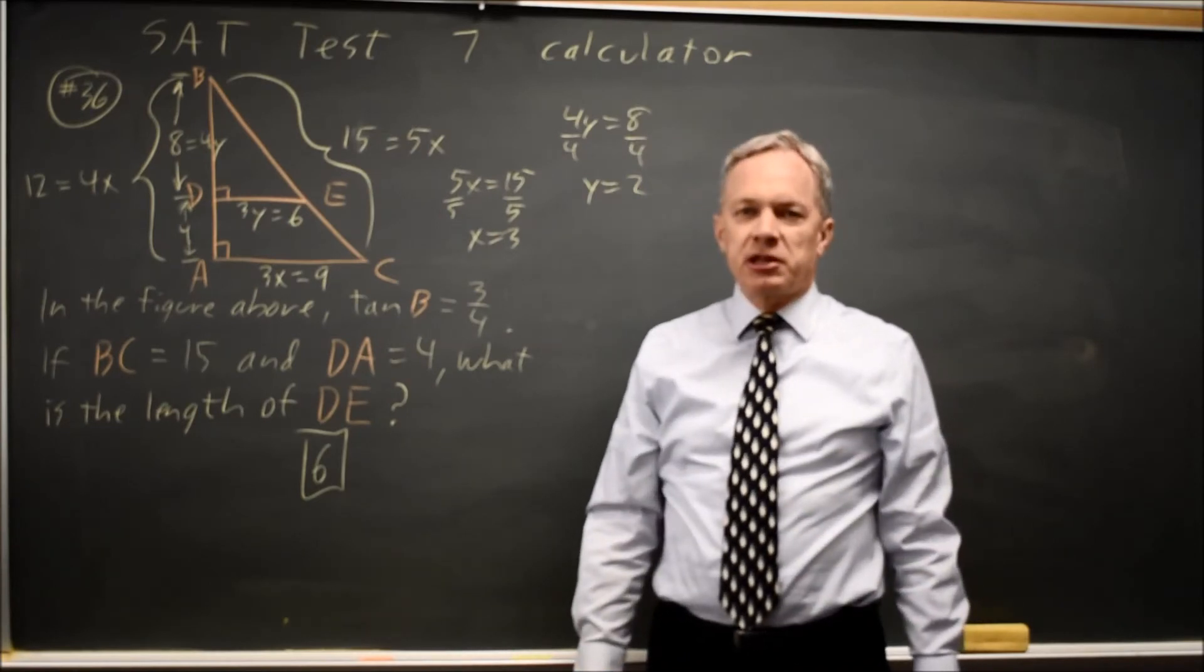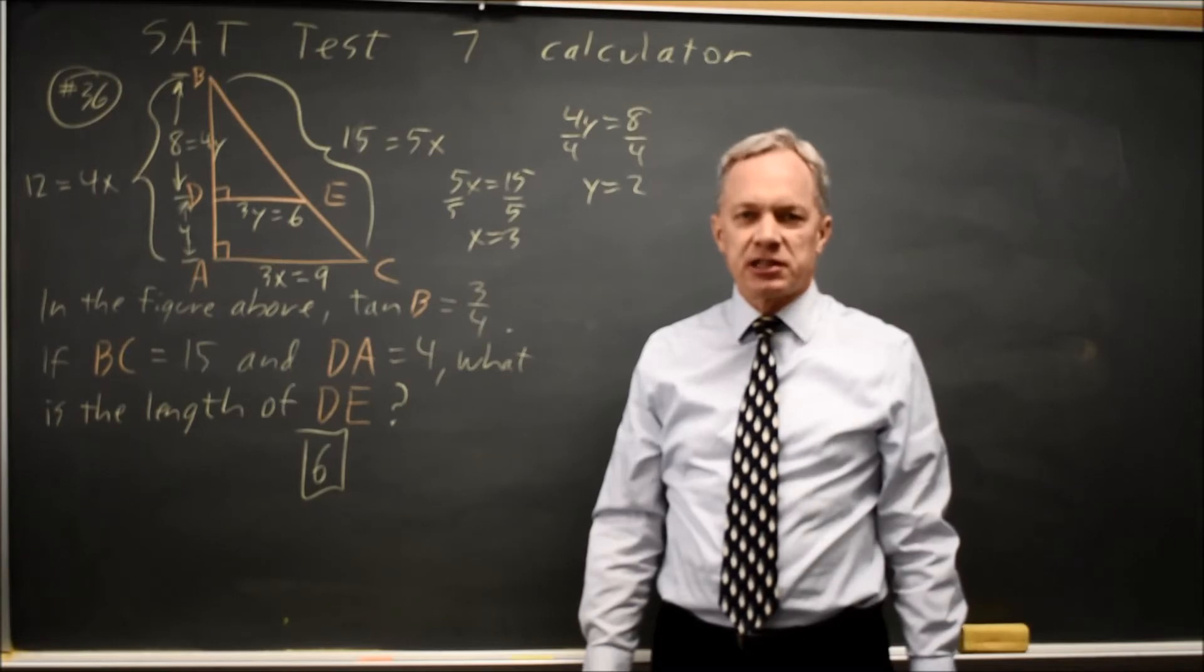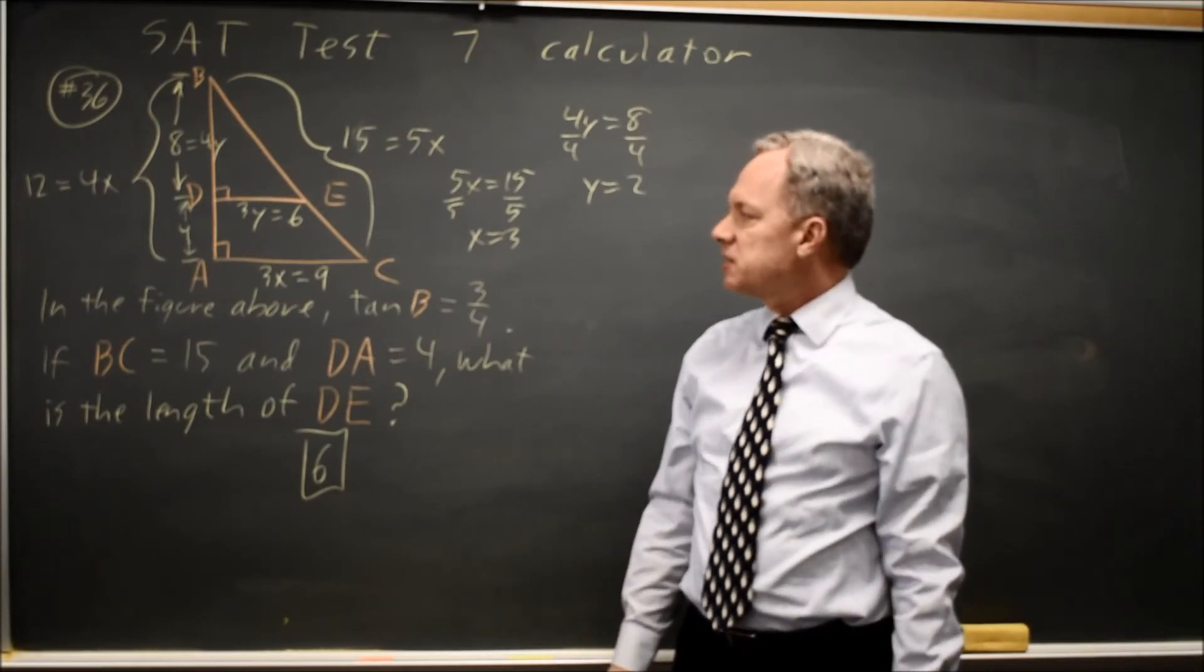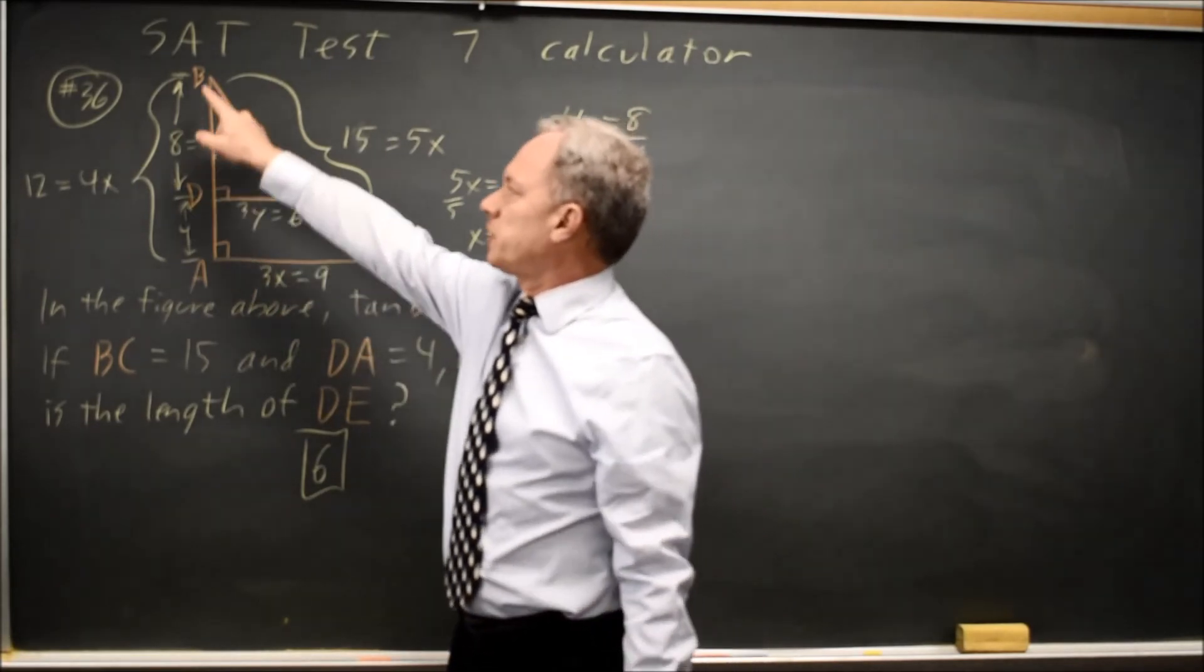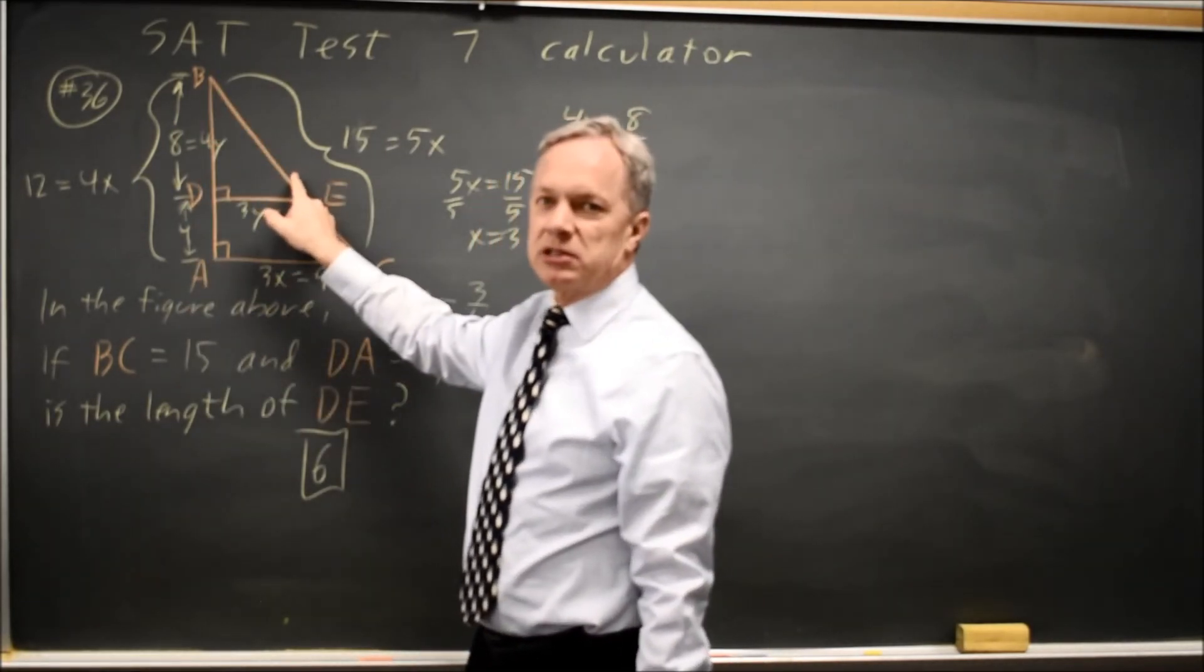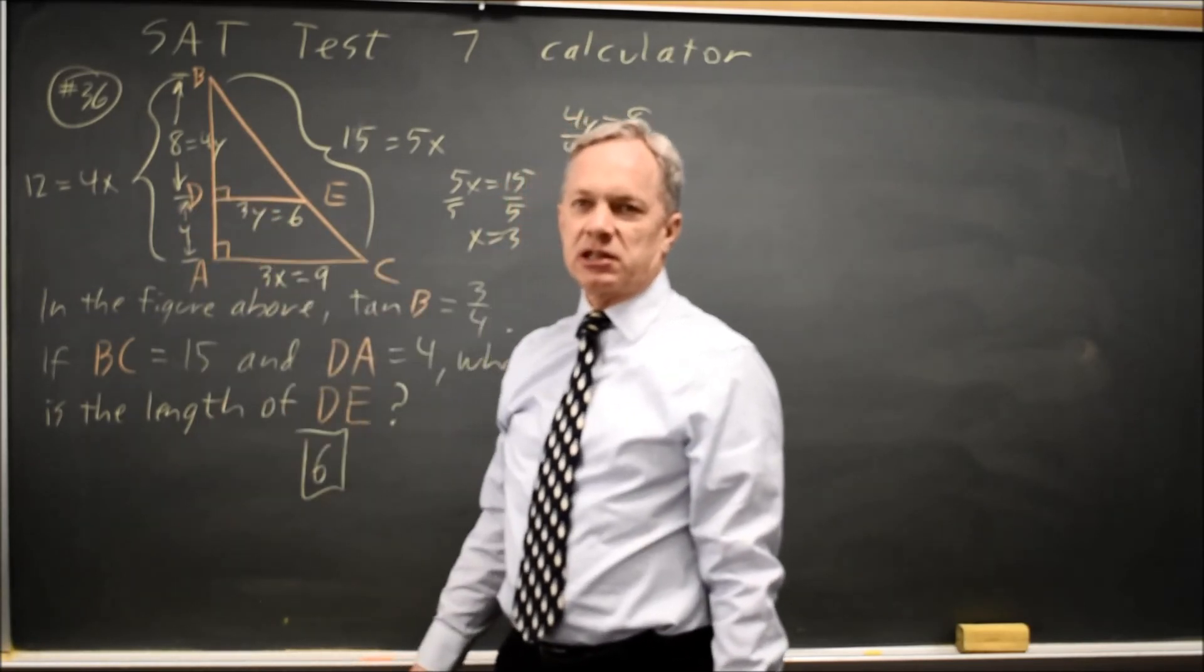You will typically need to know the sine or cosine or tangent of an angle for one question on your SAT. Remember that the sine is the opposite side over the hypotenuse, the cosine of angle B will be the adjacent side over the hypotenuse, and the tangent is the opposite side over the adjacent side.